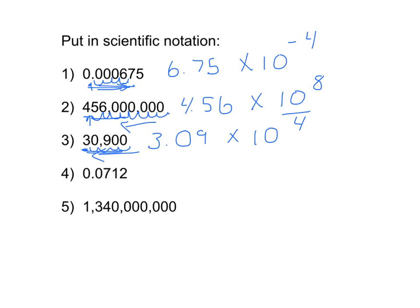For number four, we're going to move the decimal right behind that seven. So only the seven will be to the left of the decimal. We'll have seven point one two times ten. And in this case we're going to move that decimal one, two places. It will be negative because we're moving the decimal to the right and we have a small number.